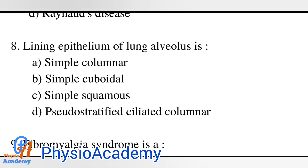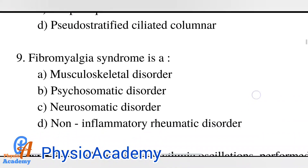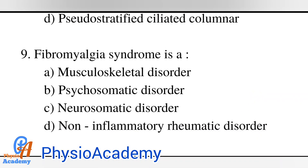Question number eight: the lining epithelium of the lung alveolus is option A: simple columnar, option B: simple cuboidal, option C: simple squamous, option D: pseudostratified ciliated columnar. The correct answer is option C: simple squamous.